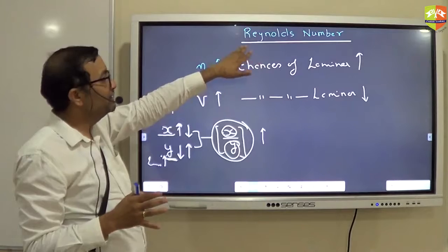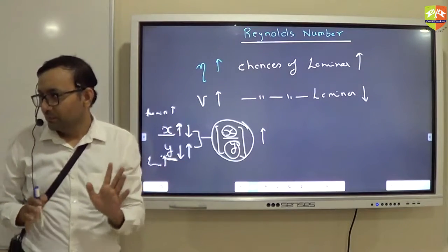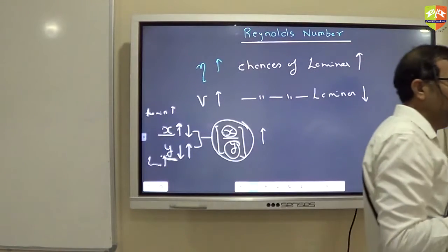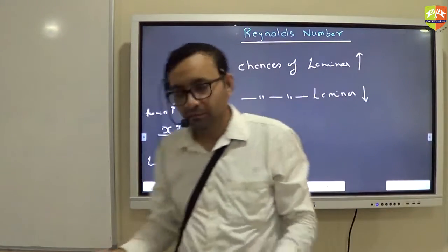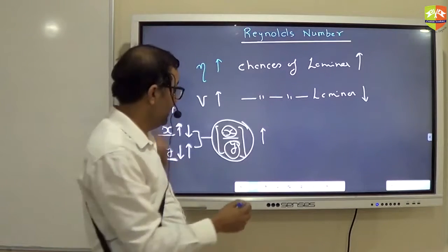So same thing here also. Reynolds number is a combination of velocity and viscosity, which will give you just one parameter to check. And if that parameter is within some range, it is laminar. Out of that range, turbulent. Any doubt?